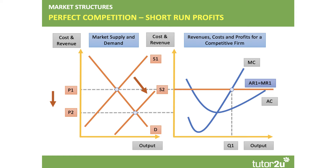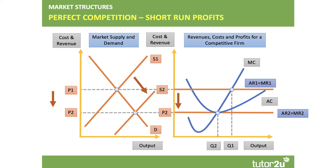So the price will fall to P2. That then becomes the price taken by each firm in the market, so P2 now becomes the average and marginal revenue curve for each firm — AR2 equals MR2. This leads to a lower profit-maximizing equilibrium where MC meets MR at output Q2. At this price, price equals the cost per unit, and because we include normal profit in average cost, when price equals average cost, normal profits are being made.